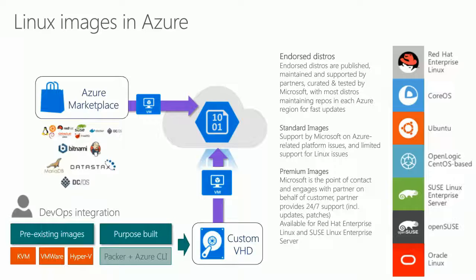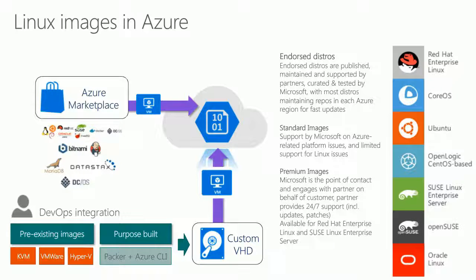Back to Endorsed Distributions — you see logos including Red Hat Enterprise Linux, Ubuntu, SUSE, Oracle Linux, and others. When we say Endorsed Distros, we have partnerships established that help us do more with those images in our platform. You know you're going to have a local repository and a relationship with a partner that helps respond to things like Heartbleed or Shellshock. We have premium images that offer 24/7 support where Microsoft manages the support case — there's only one point of contact — and those premium images are available today for Red Hat Enterprise Linux and SUSE Linux Enterprise Server.